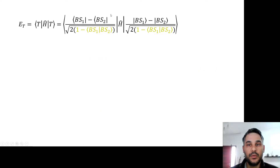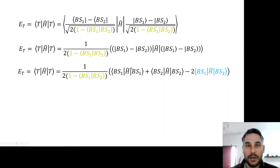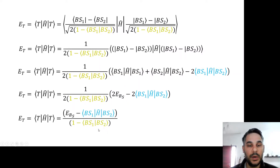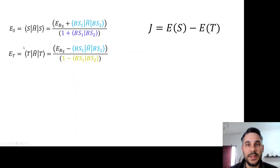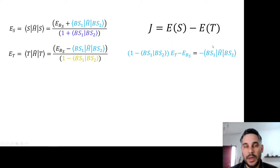For the triplet state we do the same, and the only difference is that we have a minus instead of plus in the linear combination of broken symmetry states. We calculate the expectation value of the Hamiltonian in each broken symmetry solution and get the cross term again. We arrive at a very similar expression as for the singlet. We then write the cross Hamiltonian term as a function of the triplet and broken symmetry energies — solving for the cross term from the triplet energy expression — and will use this light blue equation later.